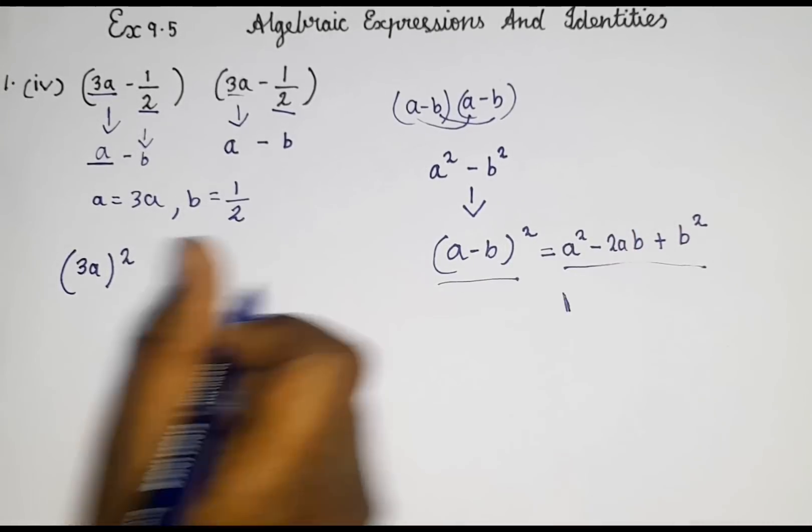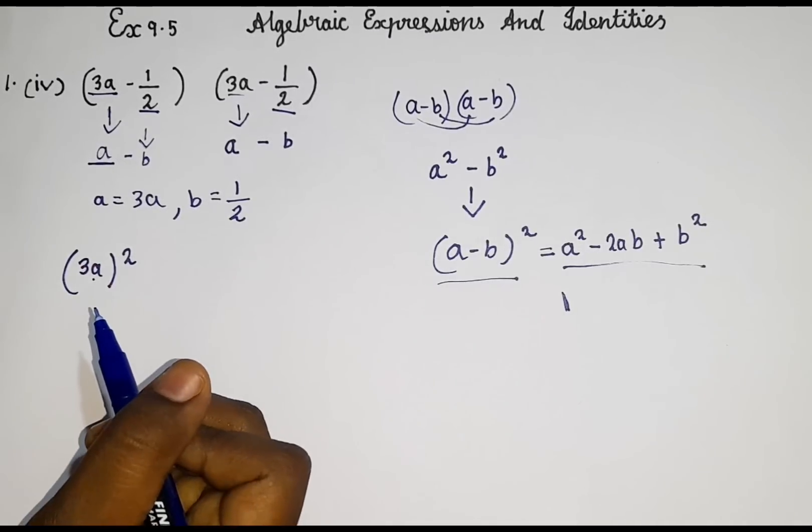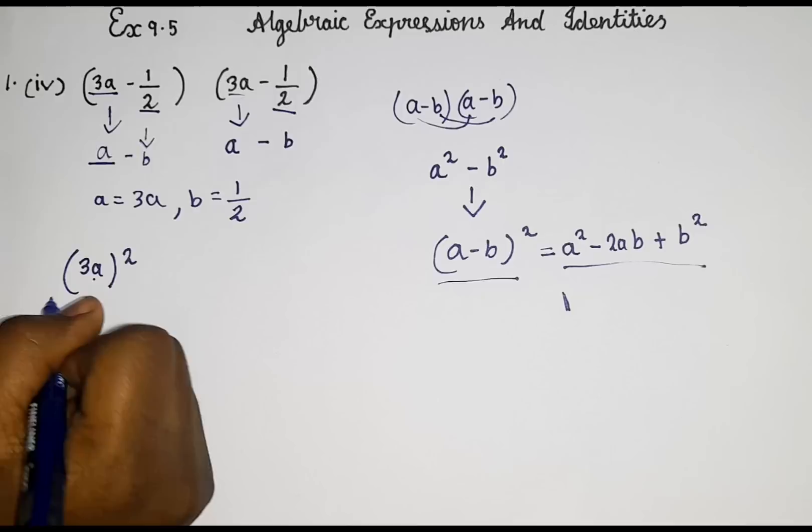But here 2, a number and a variable. That's why I am writing it as whole square.